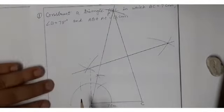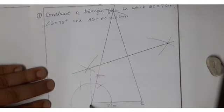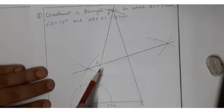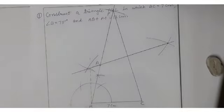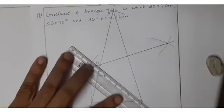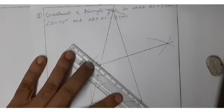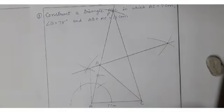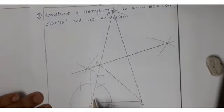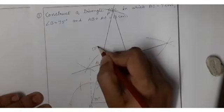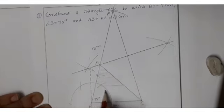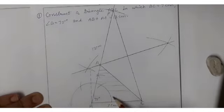The perpendicular bisector intersects the ray BD at point A. You have to join A to C. So at last you join AC, and this is your triangle ABC. This was your 75 degree angle, the 13 centimeter arc was cut, and this shaded part is your required triangle.